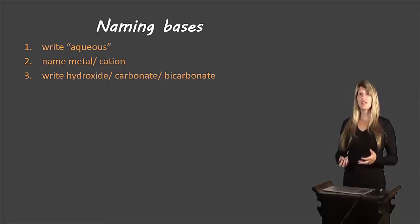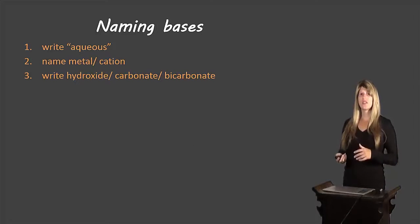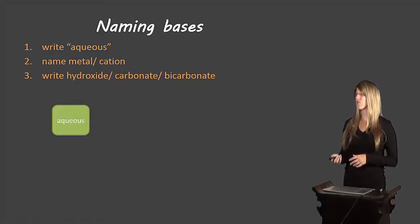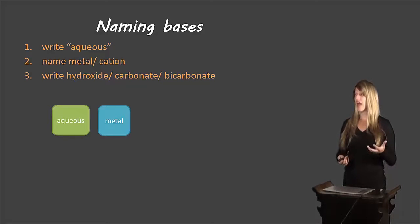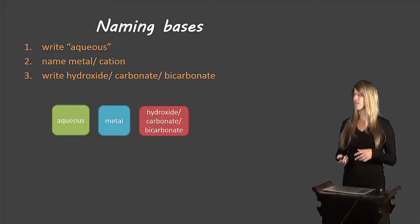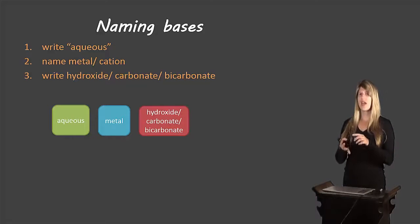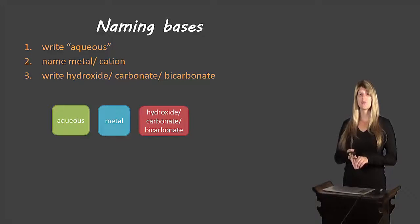So how do we name our bases? You can write these instructions down if you'd like, otherwise just go through the diagrams with me. You start off by writing the word aqueous, then you name the metal or the cation, and then you write either hydroxide, carbonate, or bicarbonate depending on which anion is present.